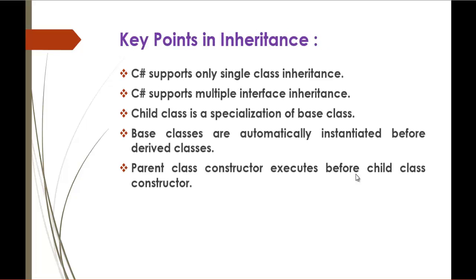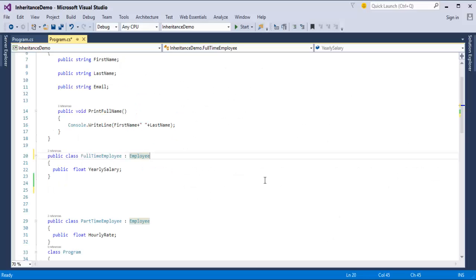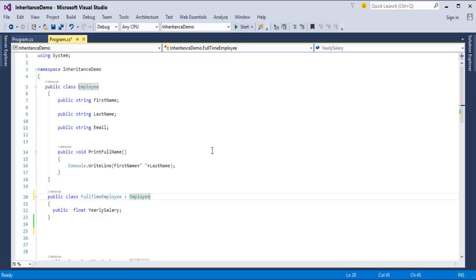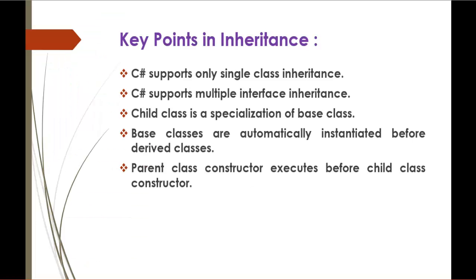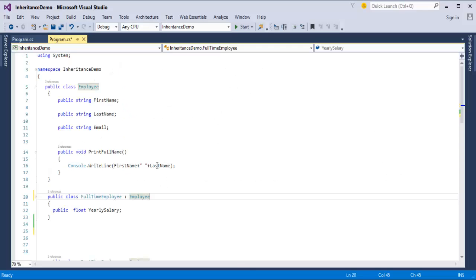Key points in inheritance: C-Sharp supports only single class inheritance. To understand this statement, we will jump into Visual Studio.